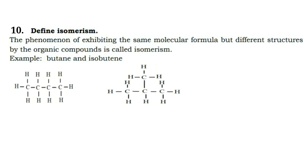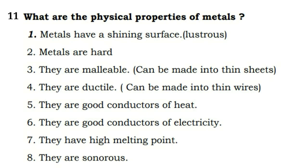Next question: define isomerism. It is the phenomenon where organic compounds exhibit the same molecular formula but different structures; this is called isomerism. An example is butane and isobutane. Normal butane (n-butane) exhibits a single straight-line structure, while isobutane exhibits a quite different branched structure.